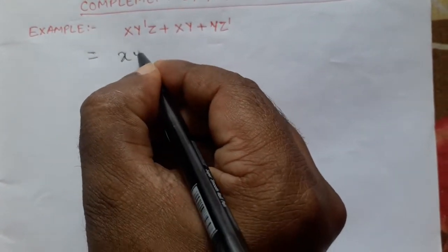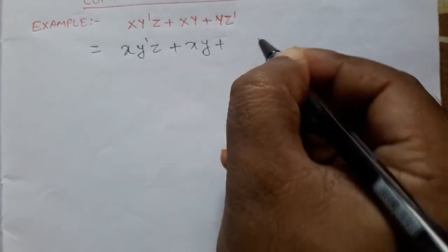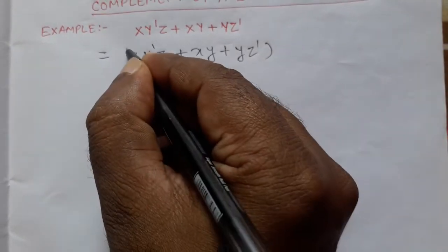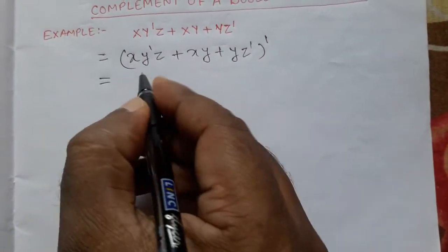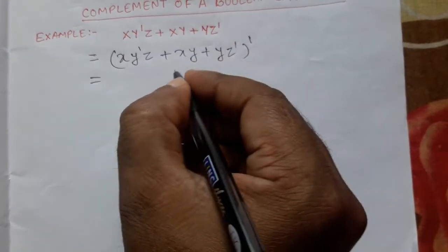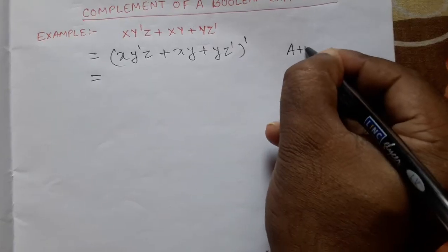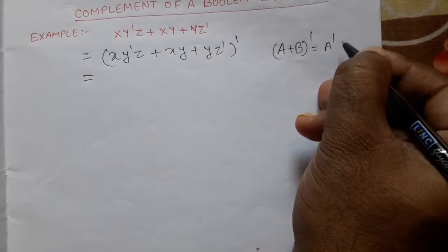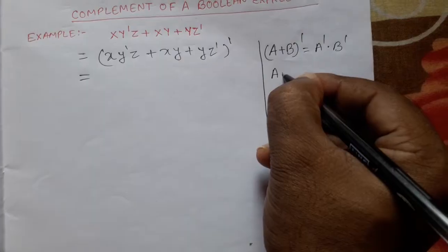We write the full whole complement. Then we will use De Morgan's theorem. De Morgan's theorem says that if we are having A plus B whole complement, then it will become A-complement into B-complement. This is the first law.